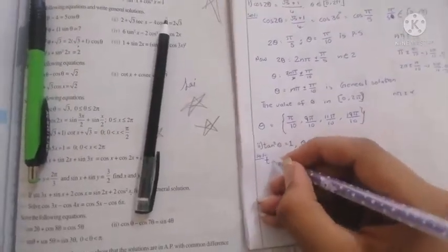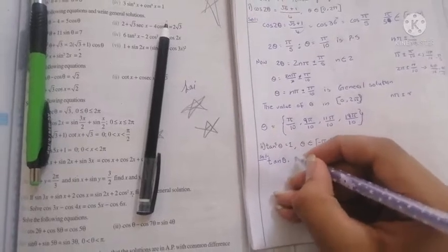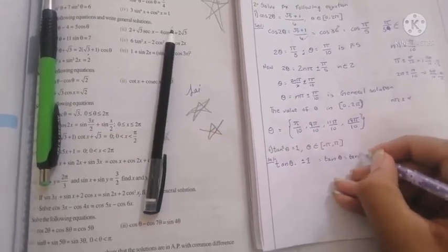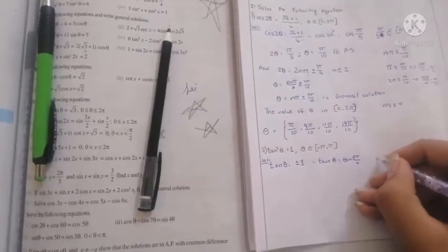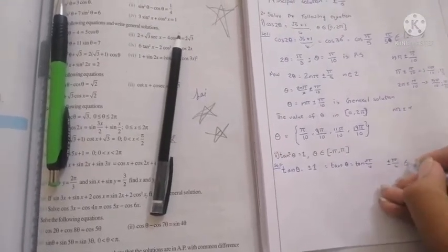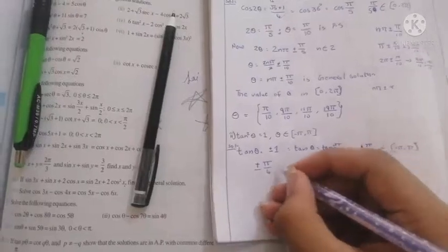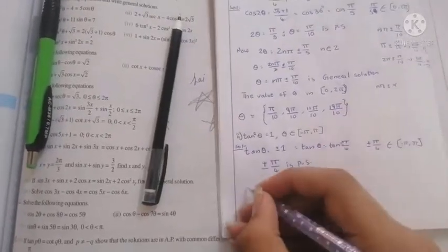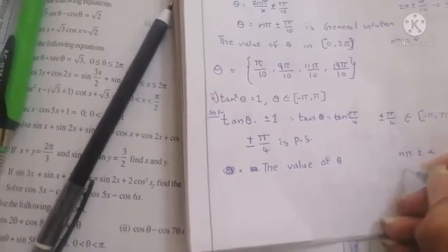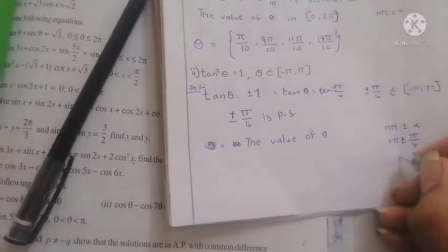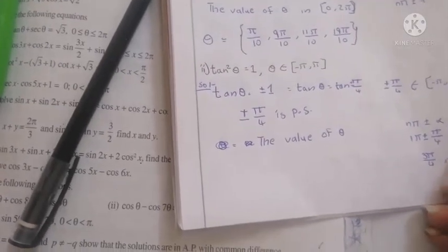Next problem: tanθ = ±1. This is satisfied when θ = ±π/4. Both ±π/4 belong to (-π, π). Substituting n=1 in nπ ± π/4 gives π ± π/4, which yields 3π/4 and 5π/4.